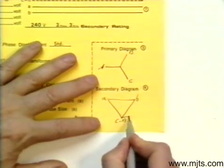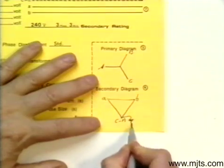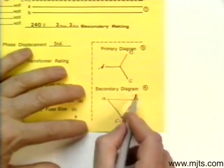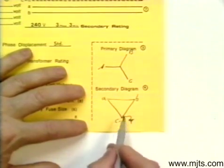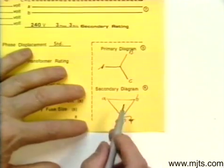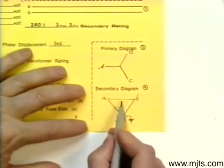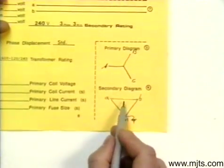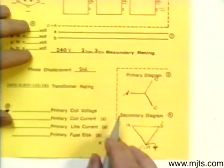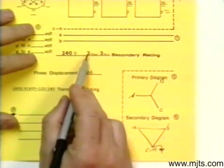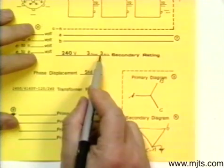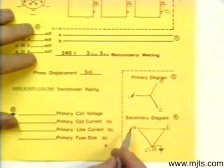What we'll do is throw a ground right on that. We can throw a ground anywhere on that thing as long as we only have one on there. So it can be on a phase or it could be center tap. If we center tap one of those transformers, then that would make it 4-wire. Then what we would have up here would be 120, 240, 3-phase, and then instead of 3-wire, it would be 4-wire.